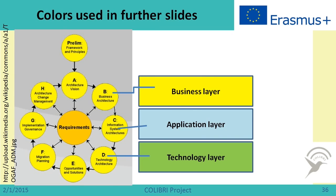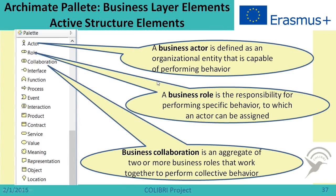The Archimate language prescribes three types of elements. These are active elements — elements that do something. These are functional or behavioral elements, which show that something happens. And there are passive elements, which are the objects over which specific actions are taken. We start with active structure elements at the business layer.